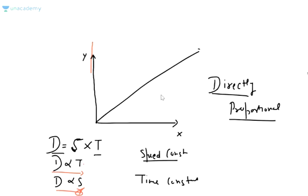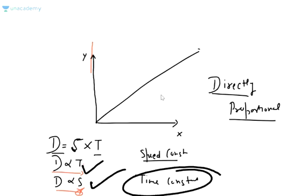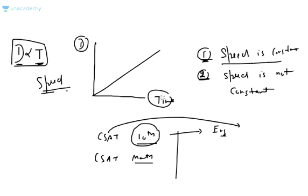So when is it directly proportional? Distance is directly proportional to time if speed is constant. Distance is directly proportional to time and time is constant. Distance is directly proportional to speed. So if speed is constant, distance goes directly proportional to time.